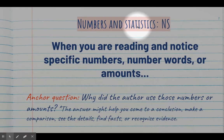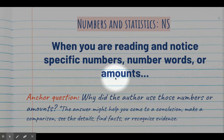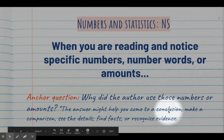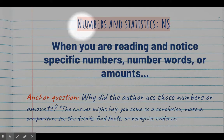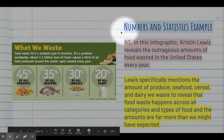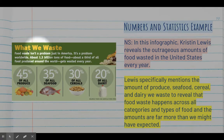Our third signpost is called Numbers and Statistics, and the abbreviation is NS. You would note a number and statistic when you're reading and you notice numbers, number words, or amounts. The anchor question you'll then answer is: why did the author use those numbers or amounts? The answer might help you make a comparison, find facts, or recognize evidence. Here's an example from the article about food waste — an infographic with lots of numbers and even more numbers in the caption.